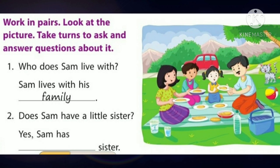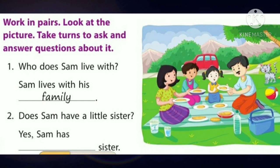Please look at the picture carefully. It is the family of Sam. We can see so many things in it — a cat, car, food, sister, father, mother, bottle, glasses, etc. First question: who does Sam live with? Sam lives with his family.